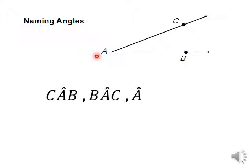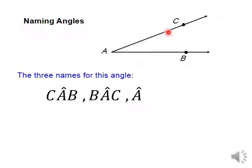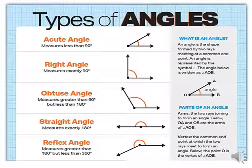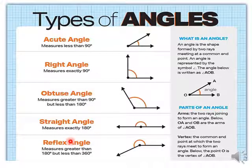An angle could be named in many ways, but we have to put the vertex in the middle. So here I can name it angle CAB or BAC, or simply angle A. Always put the vertex in the middle, and we put a cap symbol on the letter.